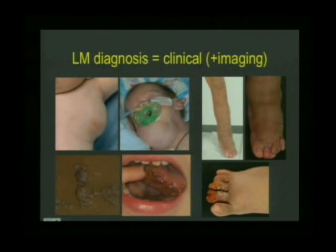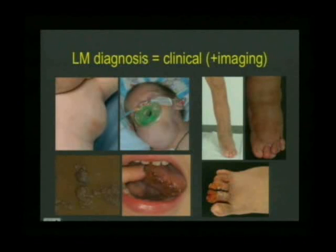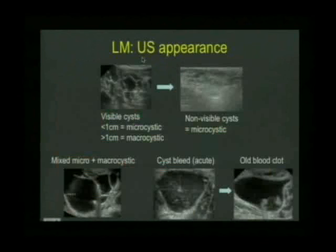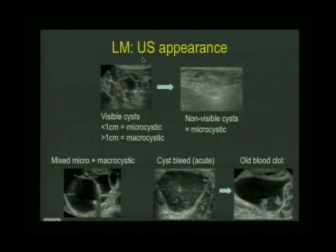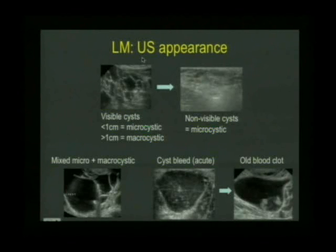All these are lymphatic malformations. This is a very typical skin involvement called lymphangiosa circumscripta. On ultrasound, we can easily define the micro and macrocysts. Microcysts are less than one centimetre, macrocysts more than one centimetre. Here's an ultrasound scan showing various sizes of cysts, and here's a mixed lymphatic malformation with a large macrocyst and smaller microcysts.